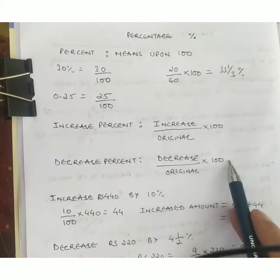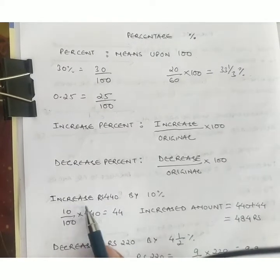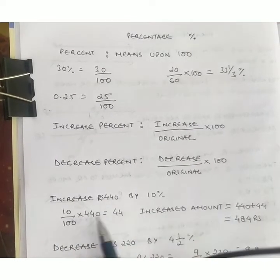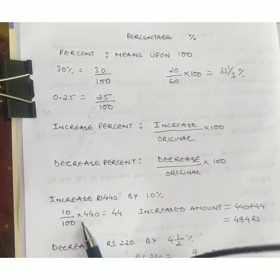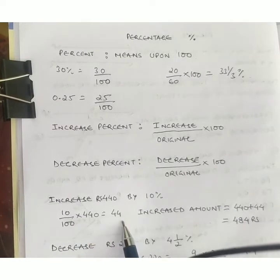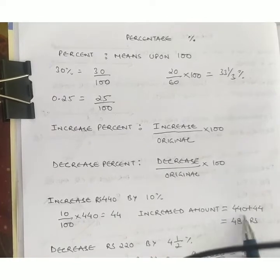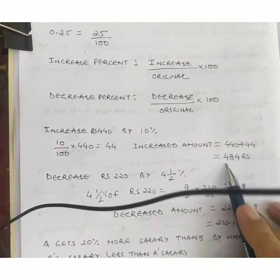Suppose we increase Rs.440 by 10%. Then 10 upon 100 into 440 equals 44. The increased amount equals 440 plus 44, which equals Rs.484.